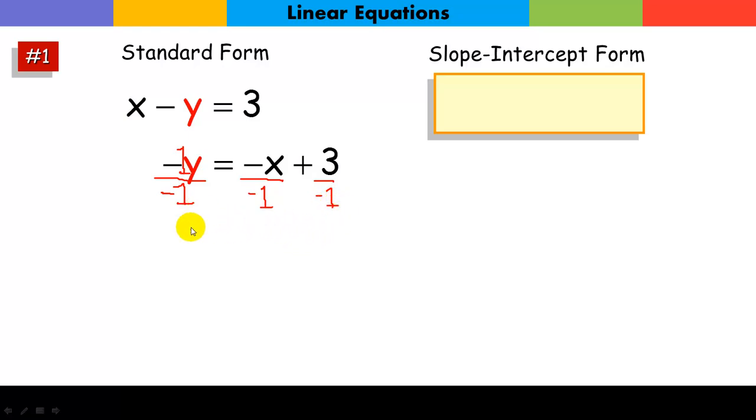When we do that now, I am going to get y alone. Negative x over negative 1 is just a positive x. 3 divided by negative 1 is a negative 3.